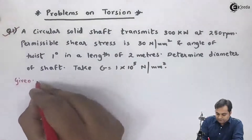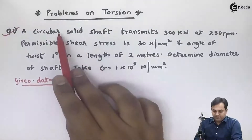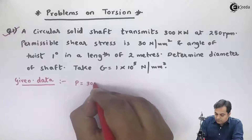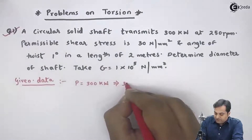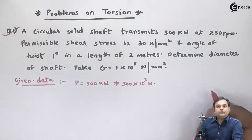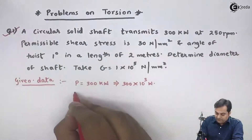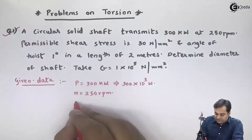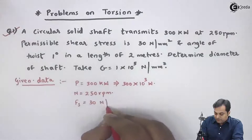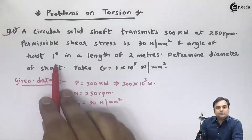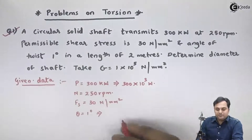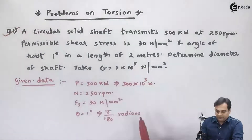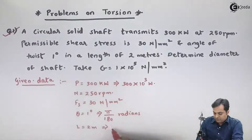Let us write the data. We have a circular solid shaft which transmits 300 kilowatts, so power is 300 kilowatts, which we convert to watts by multiplying by 10 raised to 3. Speed N is 250 rpm. Permissible shear stress fs is 30 newton per mm square. Angle of twist theta is one degree, which we convert to radians as pi by 180. Length is 2 meters, equal to 2000 mm.